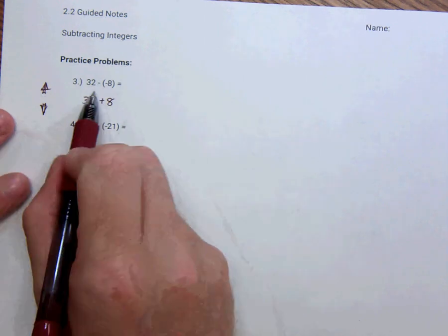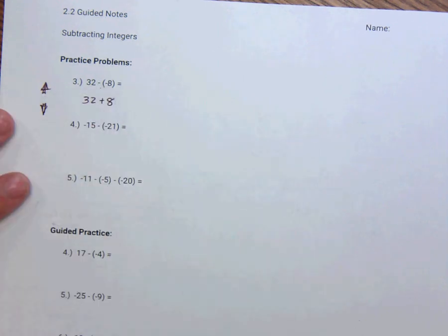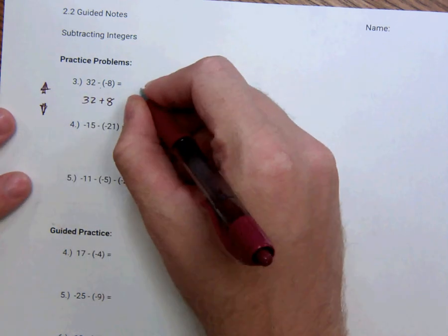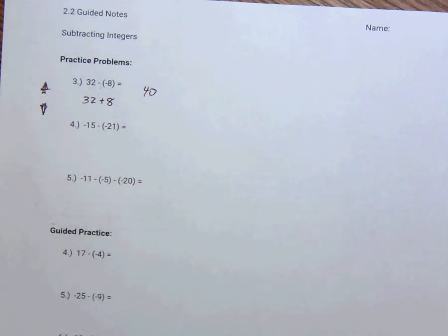Anytime you see the negative negative, a negative of a negative is positive. I'm going to say that to you so much, you're going to get sick, but I want you to remember a negative of a negative is a positive. 32 plus eight is 40 and that's it. We're done.